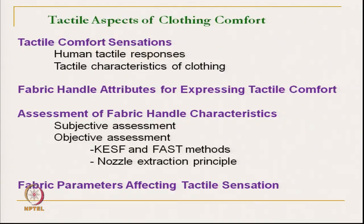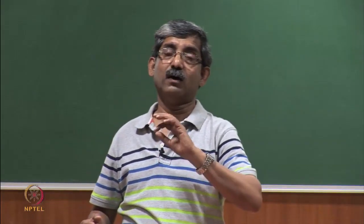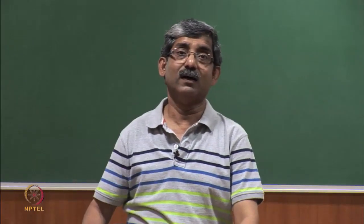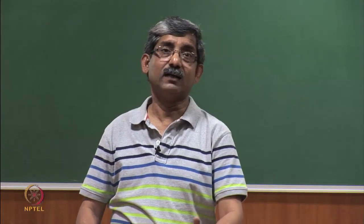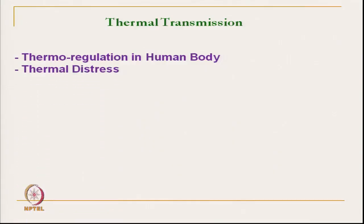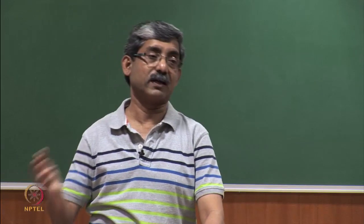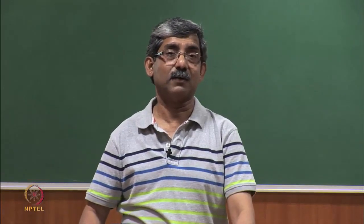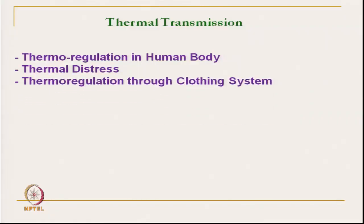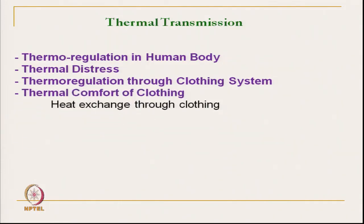Then fabric parameters affecting tactile sensation — what are the different fabric parameters: fabric bending rigidity, fabric frictional characteristics, compression — how all these characteristics are related with the tactile sensation of clothing. Then thermal transmission behaviour of clothing — we have discussed thermoregulation in the human body, thermal distress conditions. In normal temperature, normal thermoregulation takes place, but in extreme cold or extreme heat conditions it comes under thermal distress. Thermal comfort of clothing and heat exchange through clothing — that we have discussed.